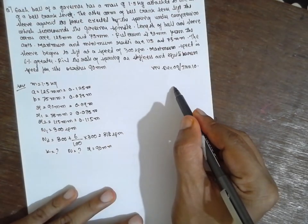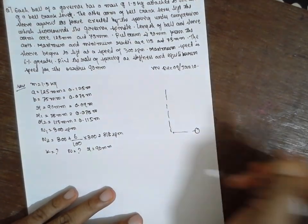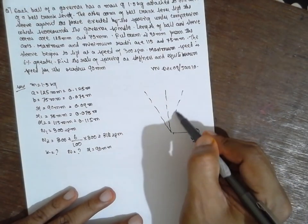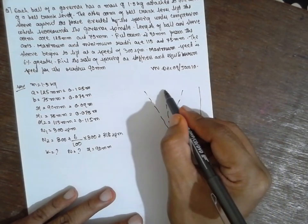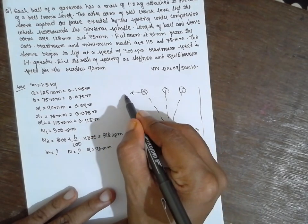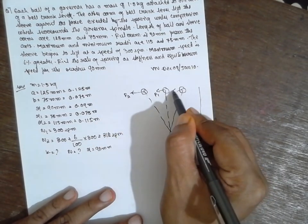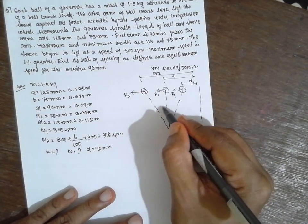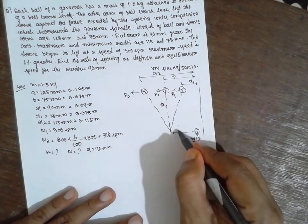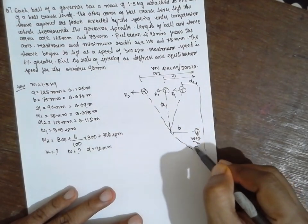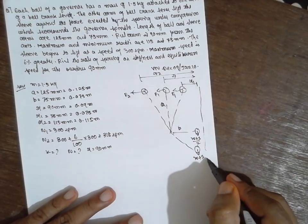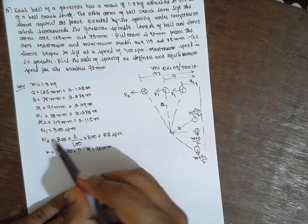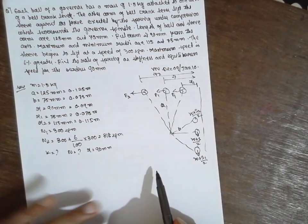Now I will draw the diagram roughly. This is the lever with the axis of the governor. These are the balls. The forces shown are F2, F, and F1 at the radii R1 (minimum), R (mean), and R2 (maximum) respectively. The arm lengths are A (ball arm) and B (sleeve arm). For the minimum position, the sleeve load is W plus S1 divided by 2, and for maximum it moves up to W plus S2 divided by 2. We have to find the stiffness and equilibrium speed.